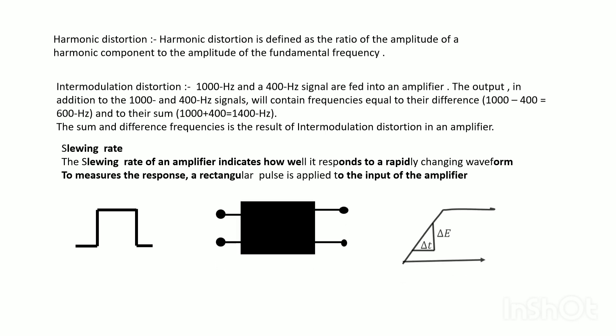Slewing rate: the slewing rate of an amplifier indicates how well it responds to a rapidly changing waveform. Slewing rate is delta E divided by delta T. Its unit is volts per microsecond.